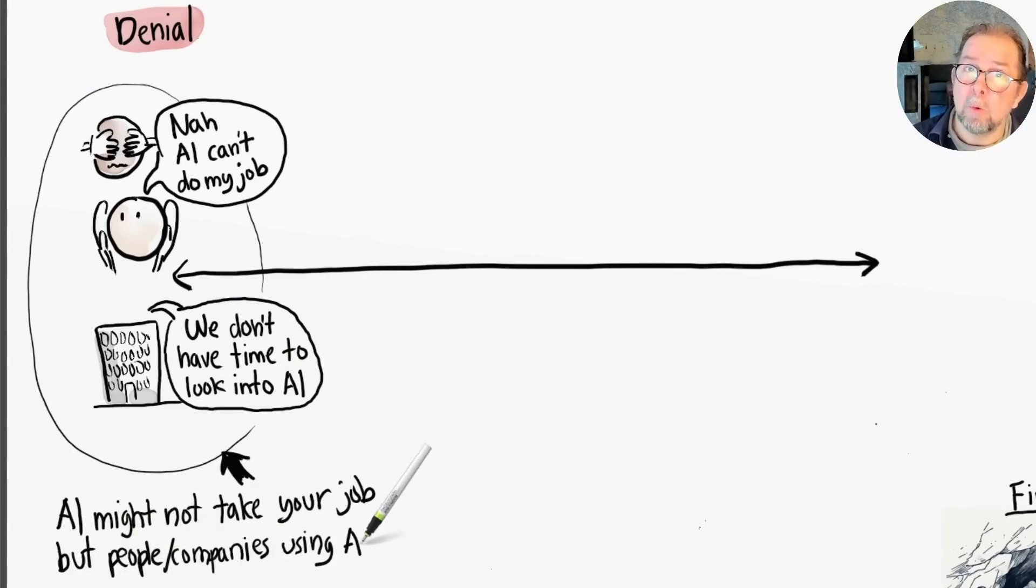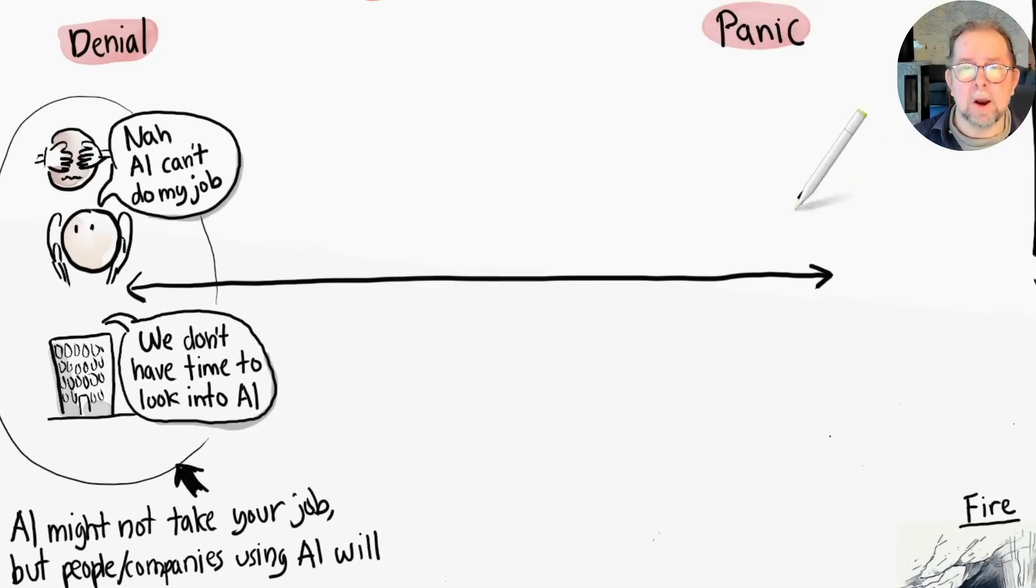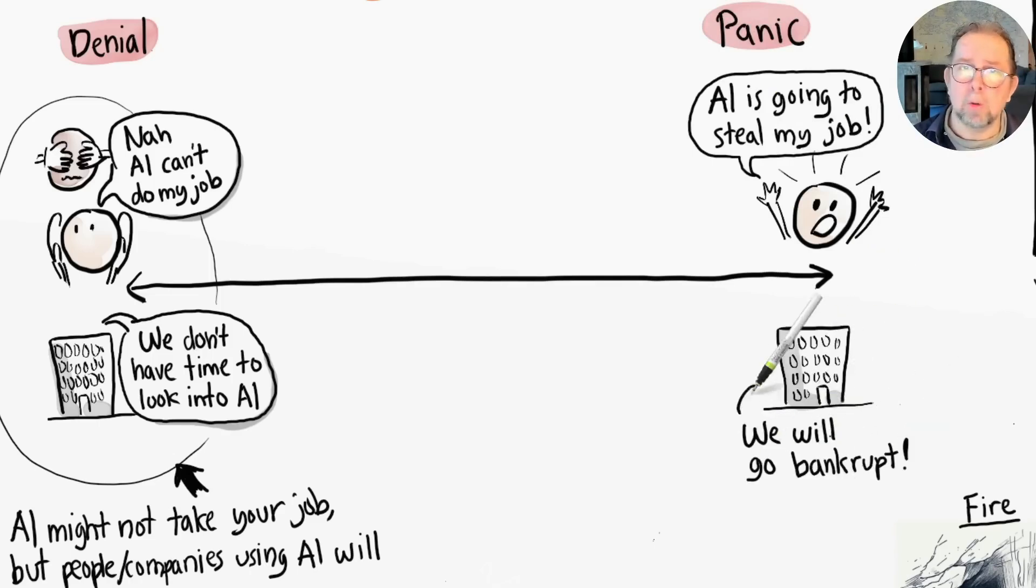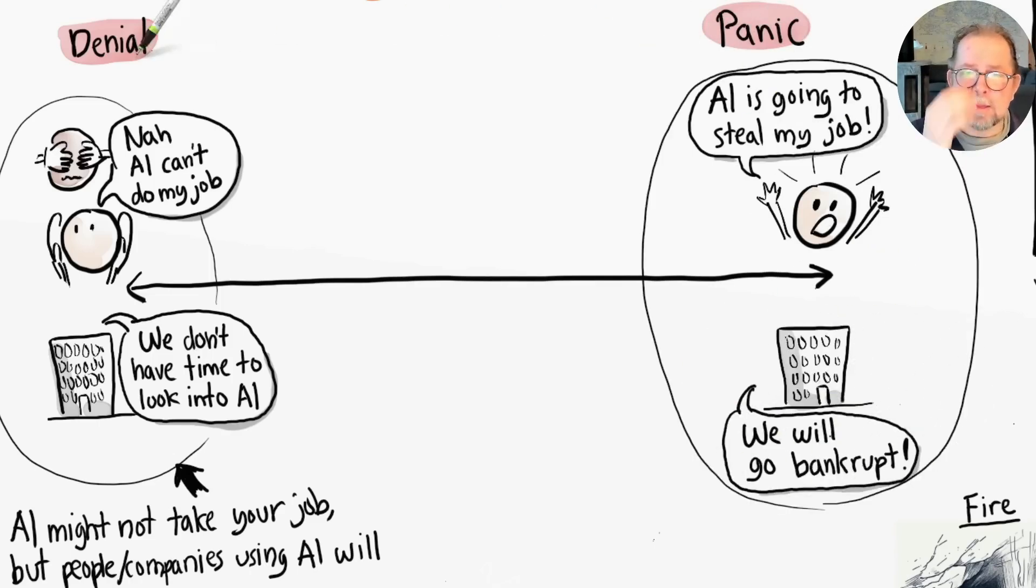On the other side of the scale, we have panic and despair - the belief that AI is going to take my job no matter what, AI is going to make my company go bankrupt. Neither of these mindsets are helpful. So I propose a middle ground: a balanced, positive mindset. AI is going to make me, my team, my company insanely productive.